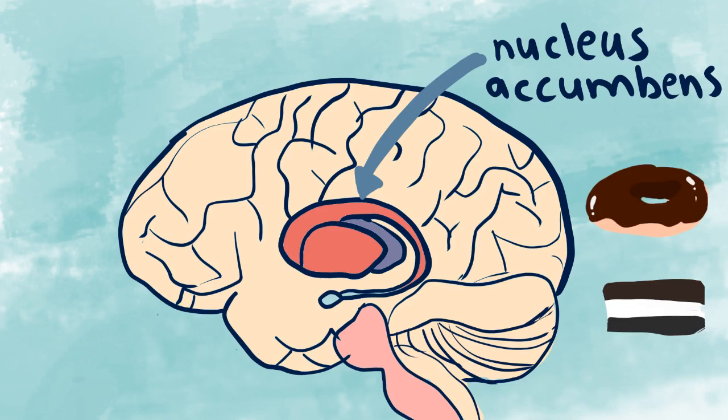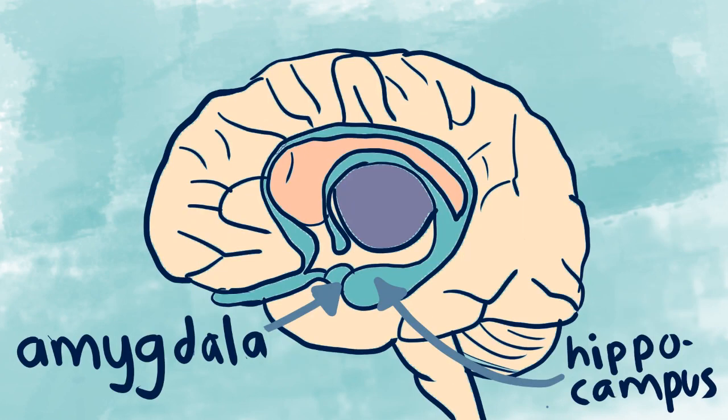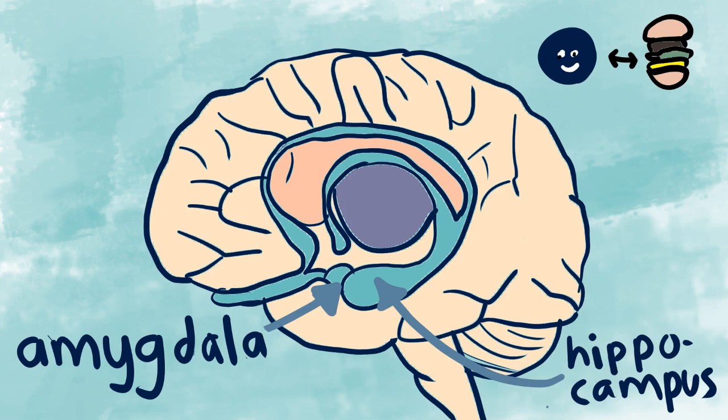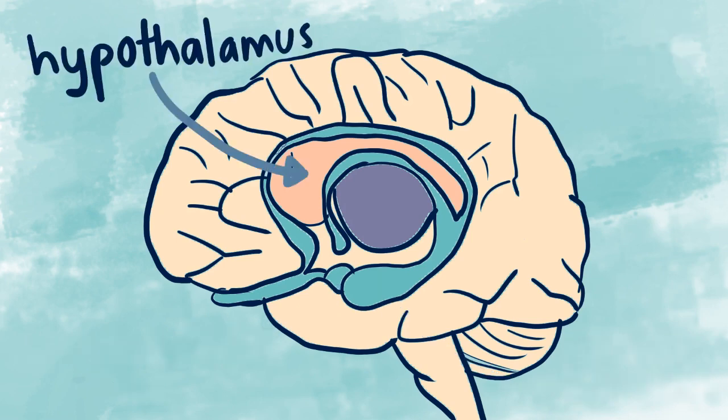The amygdala and hippocampus are also important here as they're involved in building emotional associations with food. Building positive associations with food can cause us to crave for it. The hypothalamus, along with the neurotransmitter systems such as dopamine, seem to give us the rewarding feeling of eating.